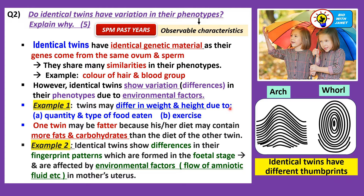For example, twins may differ in weight and height due to the quantity and type of food eaten. The twin that eats more carbohydrates and fats may be fatter or have a higher body mass. Exercise too can affect the appearance or phenotypes — the observable characteristics — of the twins. One twin may be fatter because his or her diet contains more fats and carbohydrates than the other twin's diet.